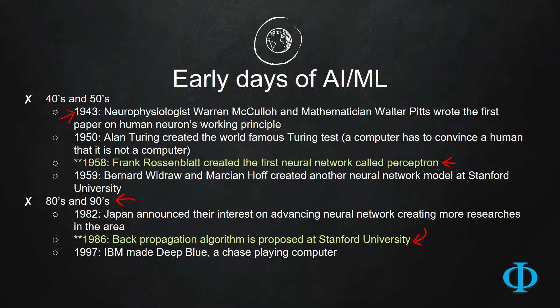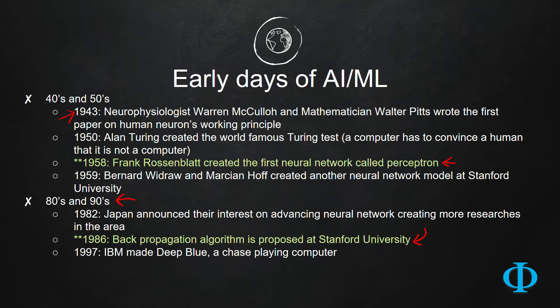In this decade, in 1997, IBM made their Deep Blue computer, which was basically a chess-playing computer. With all these discoveries, machine learning started having its baby steps.